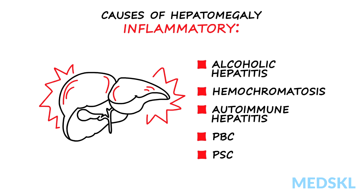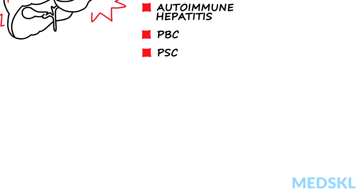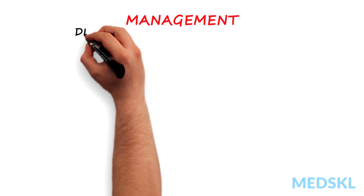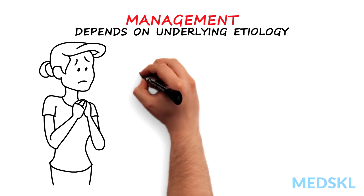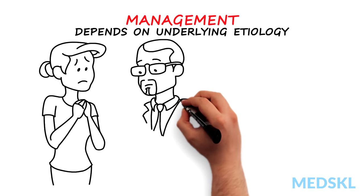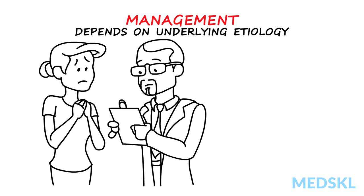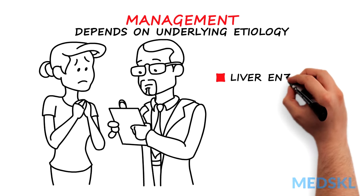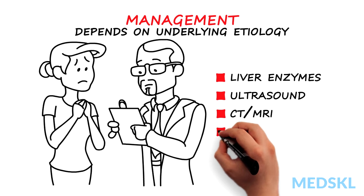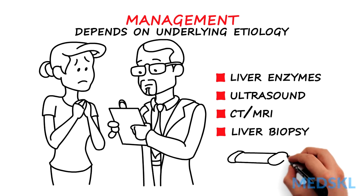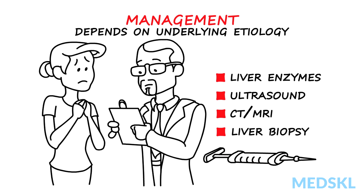Be sure to ask about risk factors for and symptoms of chronic liver disease. The management of hepatomegaly depends on the underlying etiology. A thorough history and physical examination will give you most of the clues to make a diagnosis. Investigations such as liver enzymes, ultrasound, CT or MRI imaging, and if needed a liver biopsy, can help you confirm the diagnosis and develop a management strategy.